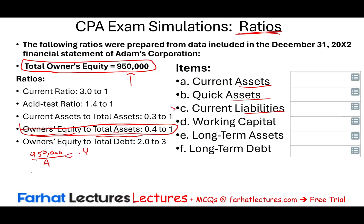Solving for A: total assets = 950 divided by 0.4, which gives us total assets of $2,375,000. Now we have total assets of $2,375,000. That opens up other calculations. We're also told that current assets to total assets is 0.3.